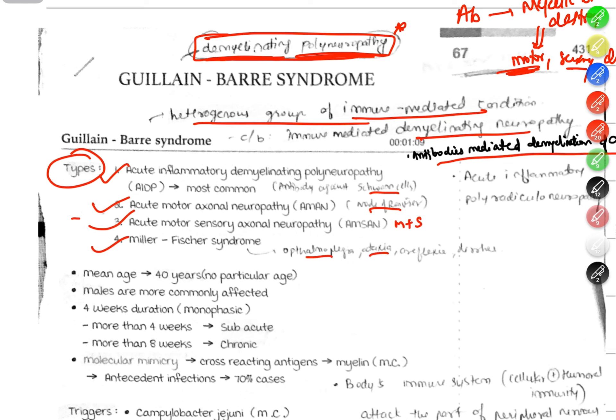And Miller-Fischer syndrome, which presents with ophthalmoplegia, ataxia, and areflexia. The most common type is acute inflammatory demyelinating polyneuropathy, AIDP.